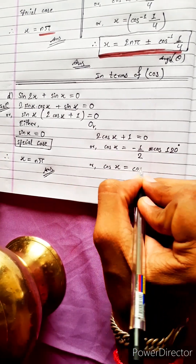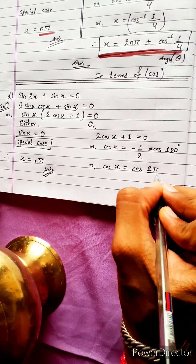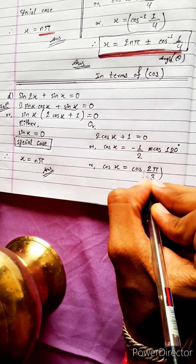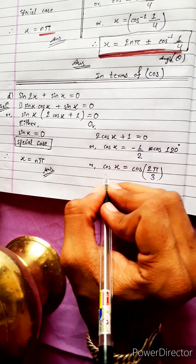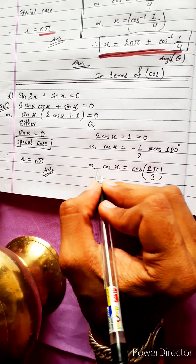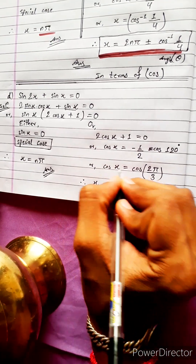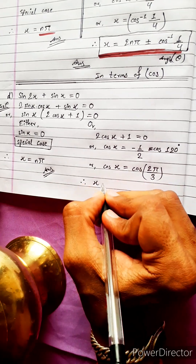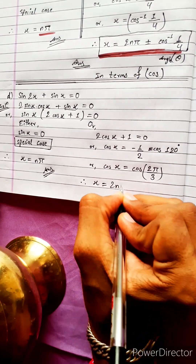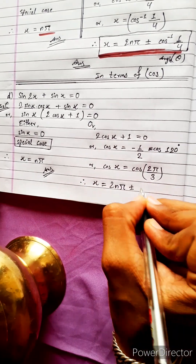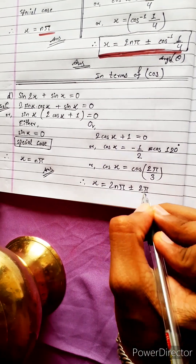So here we have cos120 degree, and cos120 is equal to 2π by 3. Since cos is a special case, therefore x equals 2nπ plus or minus 2π by 3.